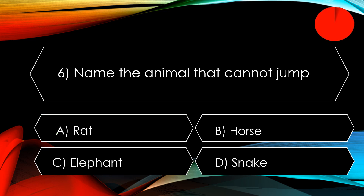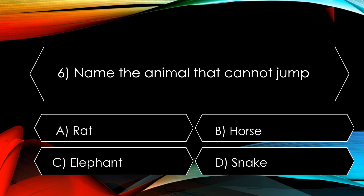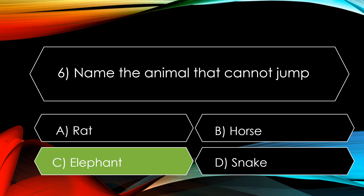Next question: name the animal that cannot jump. The options are A. Rat, B. Horse, C. Elephant, and D. Snake. The correct option is C. Elephant.